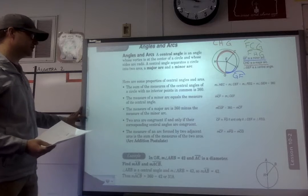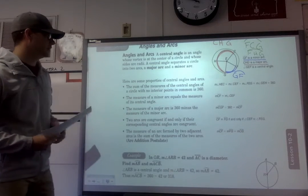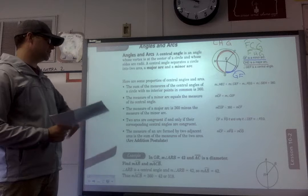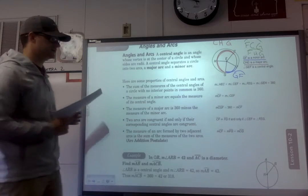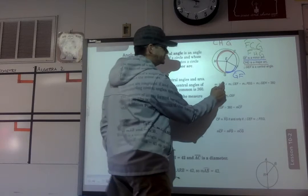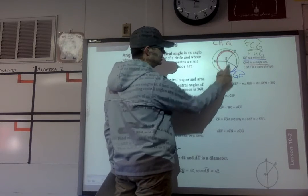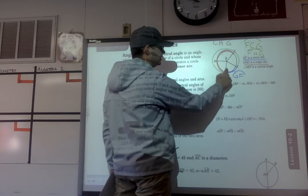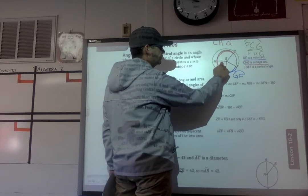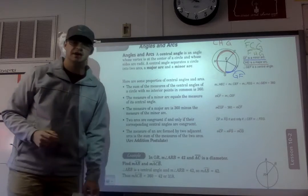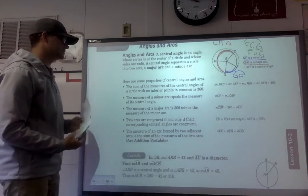Some properties of central angles and arcs: the sum of the measures of the central angles of a circle is 360 degrees. So if we take angles HEC, CEF, FEG, and GEH — those four angles added together will equal 360 degrees, just like we've worked with in the past.